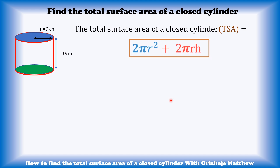That is the formula you need to keep in mind. So let's apply it. In this question, we are going to take pi as a constant, which is 22 over 7.